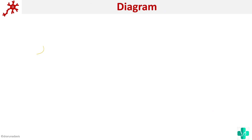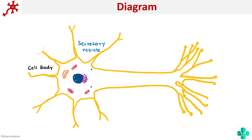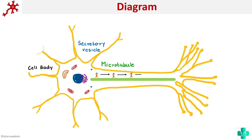I will explain this concept with the help of a diagram. Suppose this is a cell body of a neuron, and we have various organelles present in the soma that synthesize many substances, present as vesicles. These secretory vesicles in the soma have to be transported to the axon. For that, microtubules act as tracks or guide wires for the transport, and this is carried out by special molecular motors called kinesin.